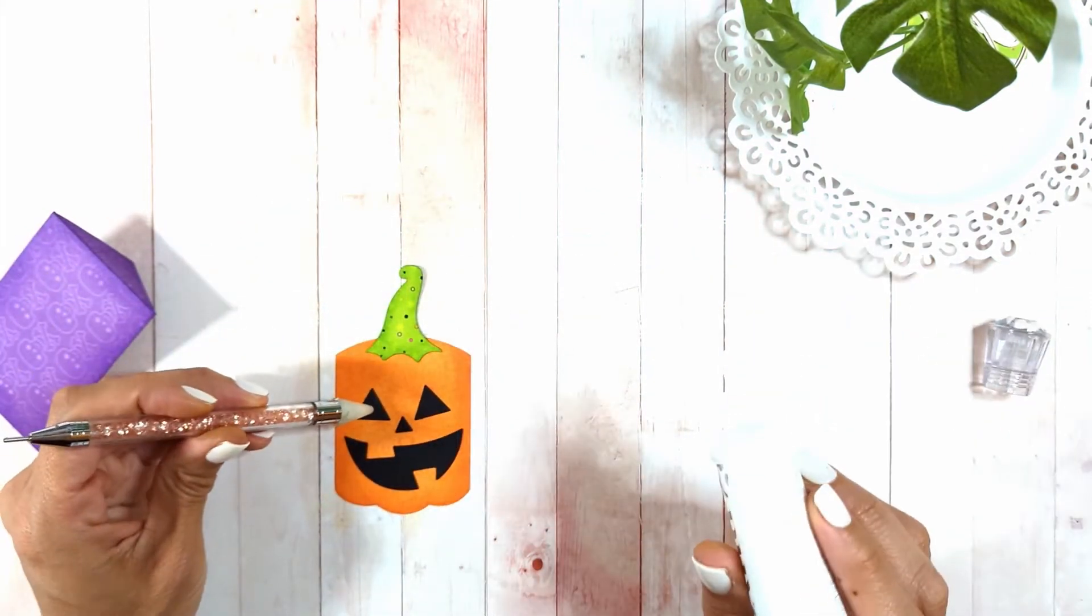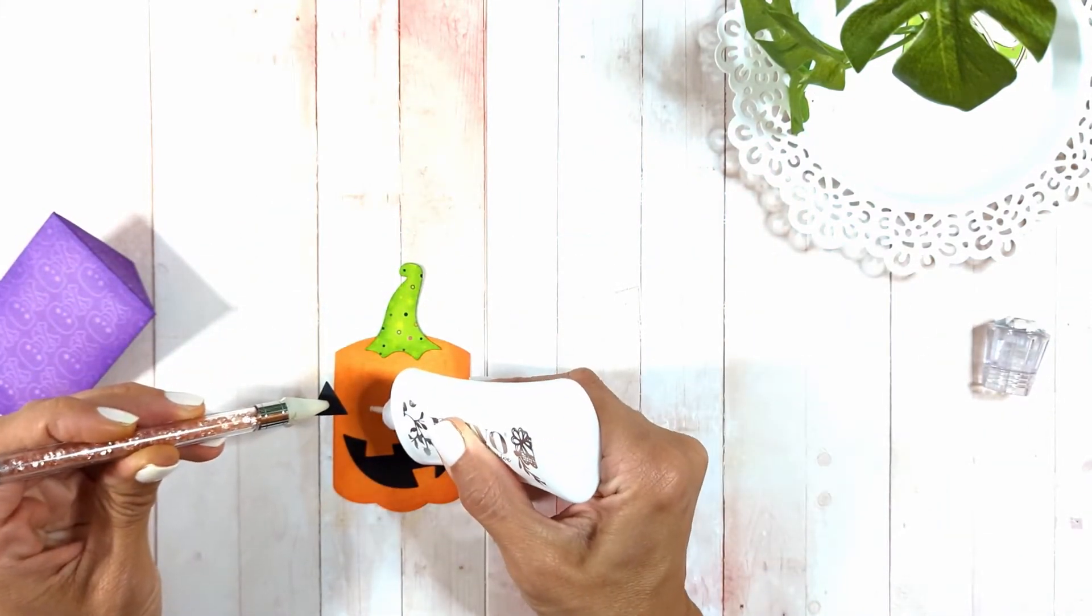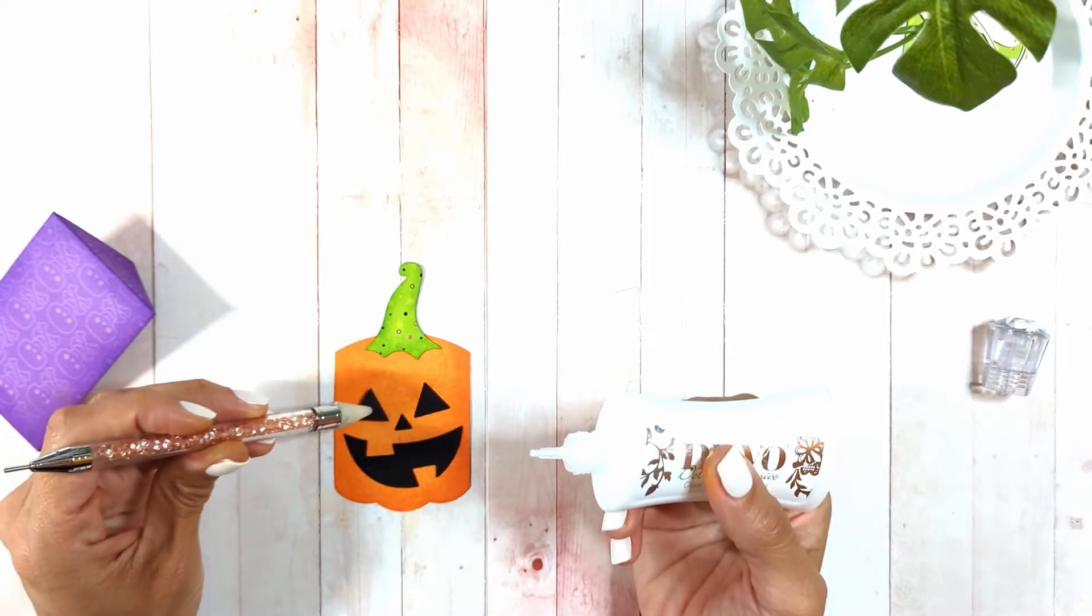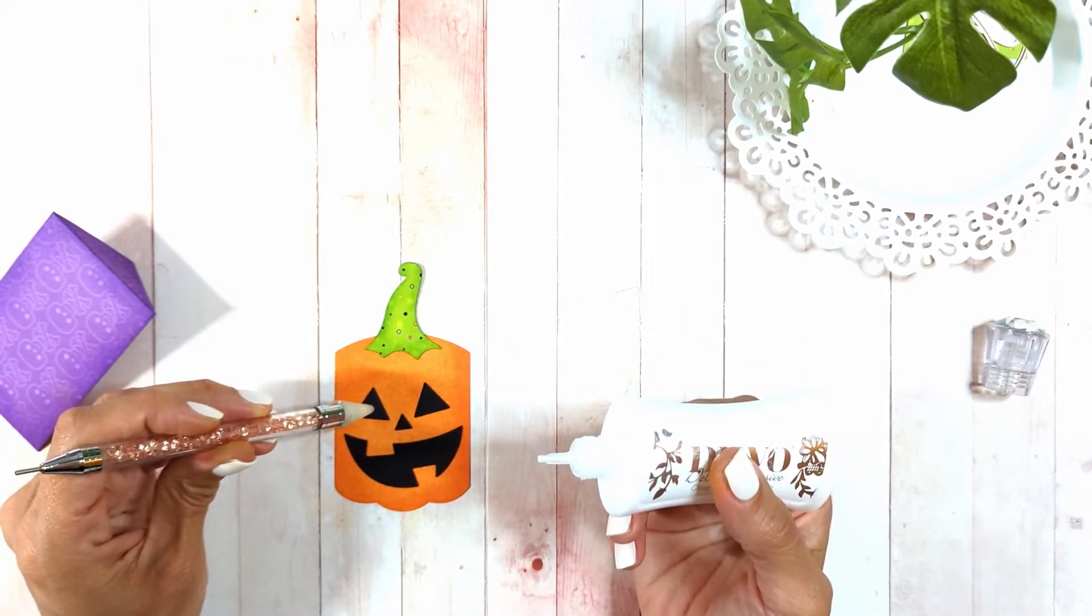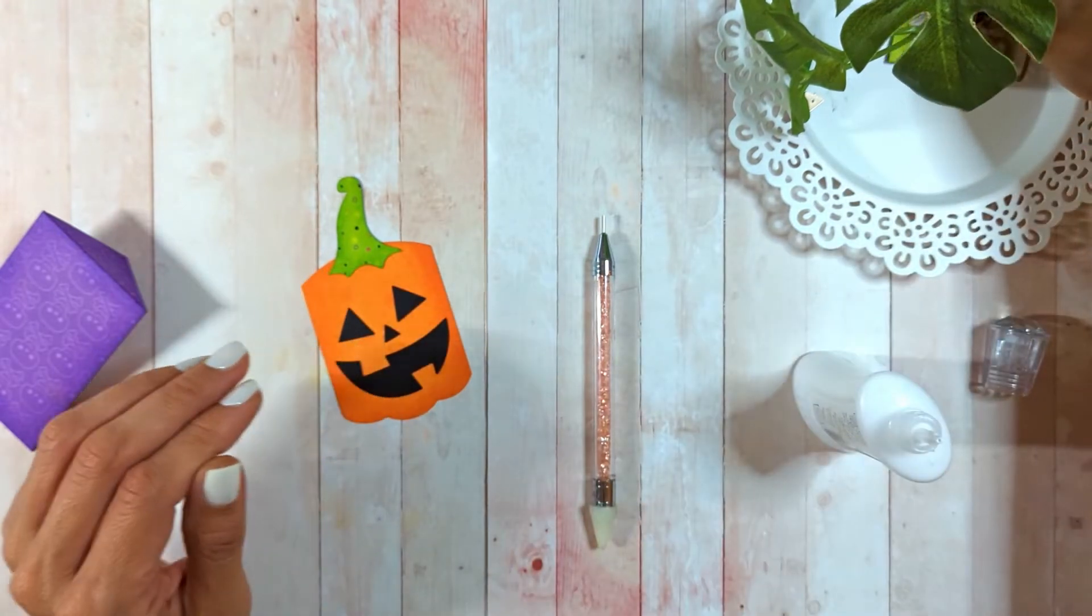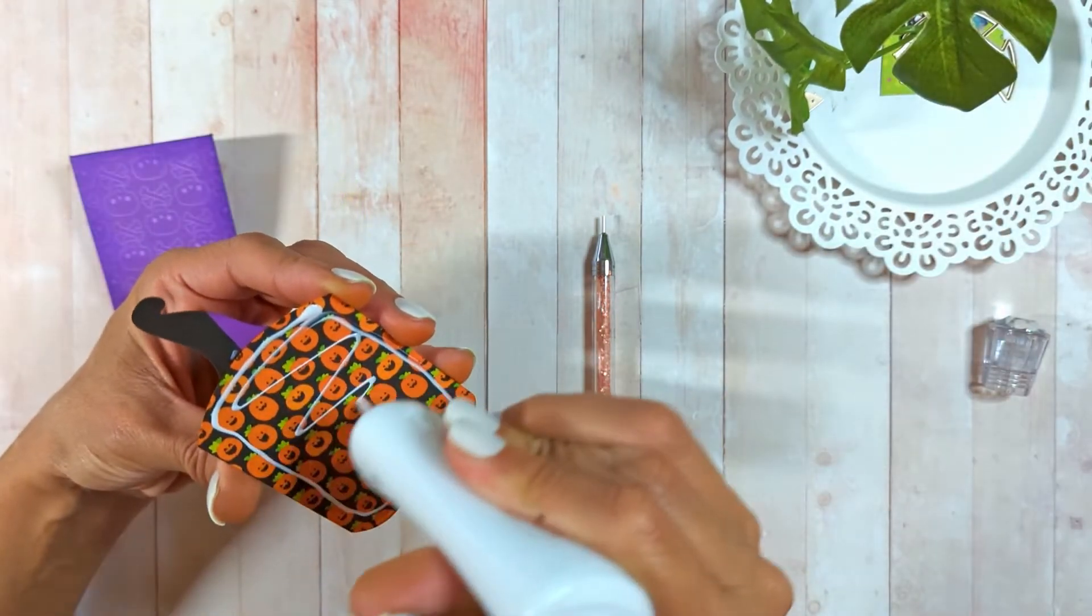When the pieces are very tiny like this, I put them where I want them to be, then come with a toothpick, remove them, put a dot of glue, and return them back. It makes it very easy to place these tiny pieces.